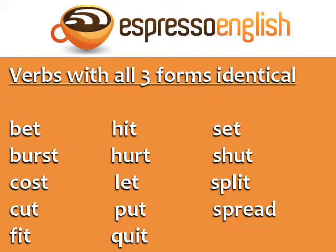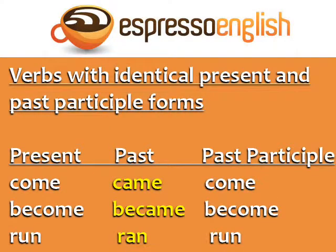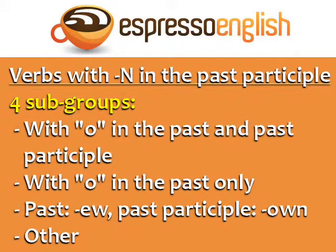The next group is verbs with identical present and past participle forms. The only different form is the past. Come, came, come. Become, became, become. Run, ran, run.